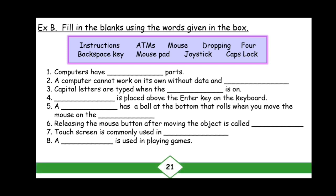Exercise number B is on page number 21. Put your finger on your books and read the question aloud with me. Exercise number B: Fill in the blanks using the words given in the box. There are some words in the box and we have to use them to fill the blanks. Let me read the words for you and you have to read the words with me. Our first word is: instructions.